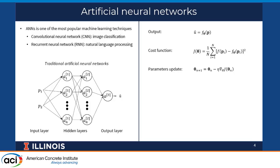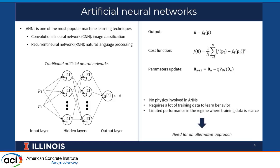ANN typically requires a training process to get good results. The training process is essentially reducing the cost function using a gradient descent algorithm, and the cost function depends on the application. For regression problems, mean squared error is typically used. However, ANN has some limitations: it does not have any prior knowledge about the problem, it requires a lot of data for training, and it does not generalize well to unseen data.